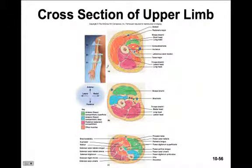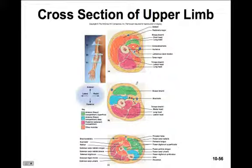Here's a cross-section looking into the compartments of the upper limb. We have a superficial anterior or flexor compartment and a deep anterior or flexor compartment, where we see the brachialis beneath the biceps brachii. On the posterior side, we have an extensor compartment where we can see the three heads of the triceps brachii.